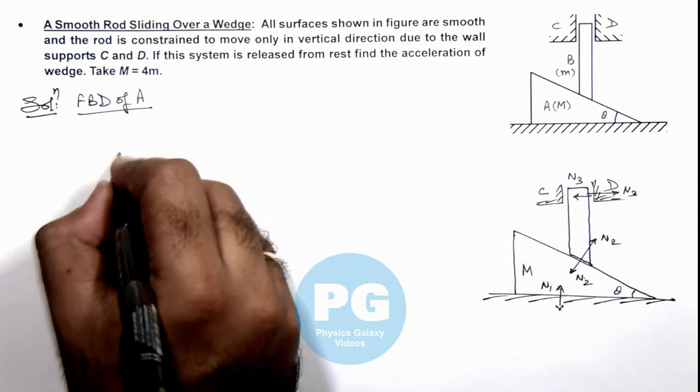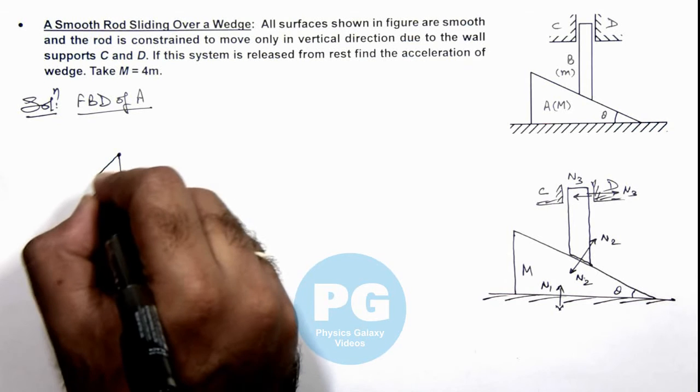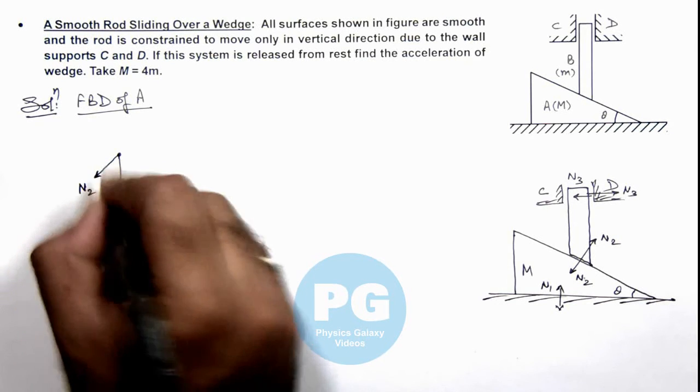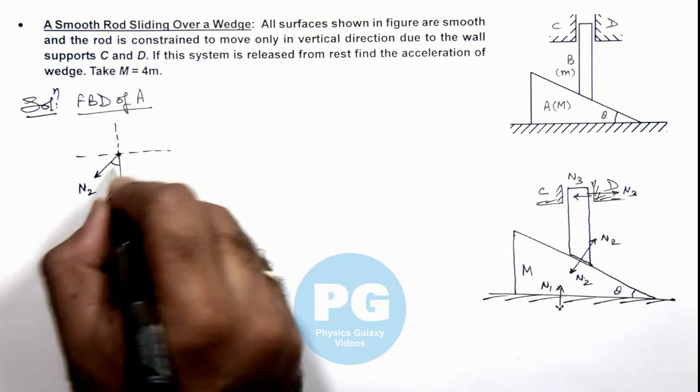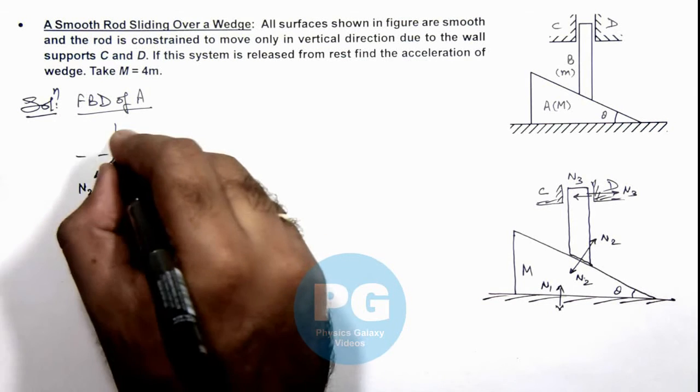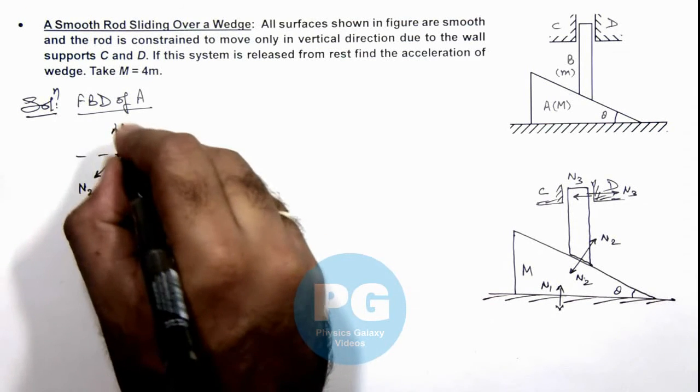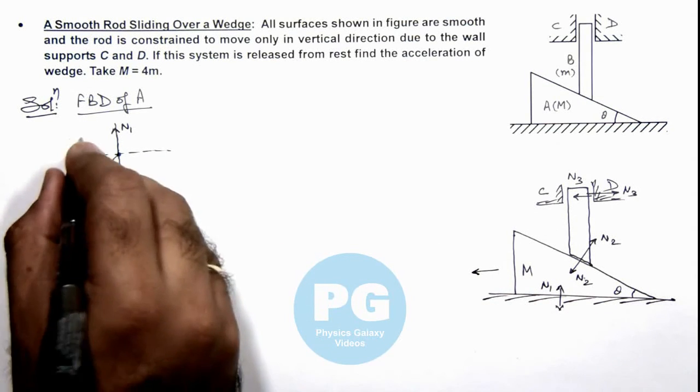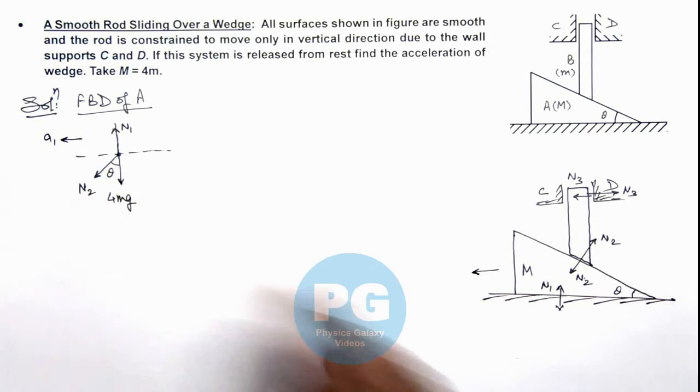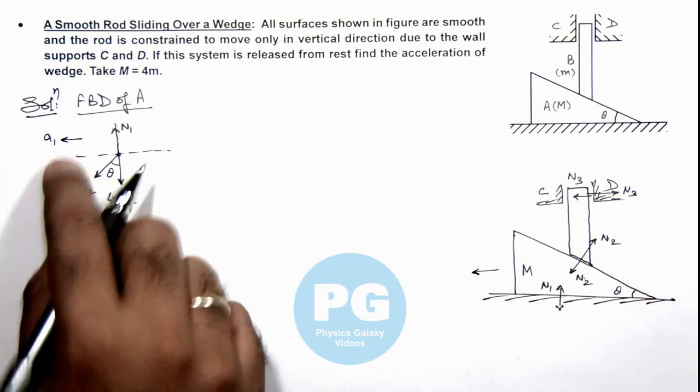Toward leftward downward direction this is the normal reaction N2 which is acting on it due to the rod, which is at an angle theta with the vertical. And a normal reaction N1 acting on it due to ground. And the wedge moves toward left with an acceleration a1, that is due to the horizontal component of N2.